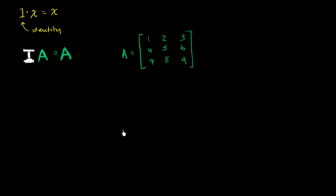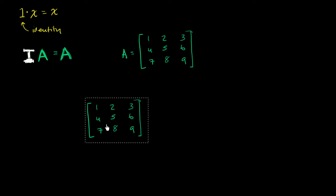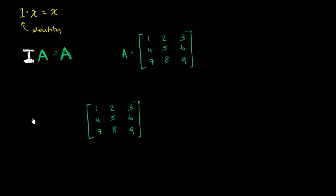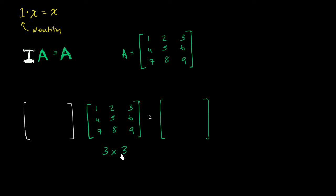I encourage you to pause this video and try to think about whether you can construct some matrix I. First, think about what the dimensions of matrix I have to be in order for I times A to give you A again. So, we're multiplying something times a 3 by 3 matrix and getting another 3 by 3 matrix.